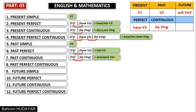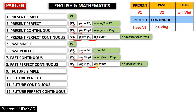What about past perfect continuous? Verb two, have + verb three, and be + verb-ing. Do not forget to write them in parentheses — we use parentheses when we multiply them. The second form of have is had. The third form of be is been. The result is had + been + verb-ing, and it is the main formula of past perfect continuous. We're going to use this formula in past perfect continuous.